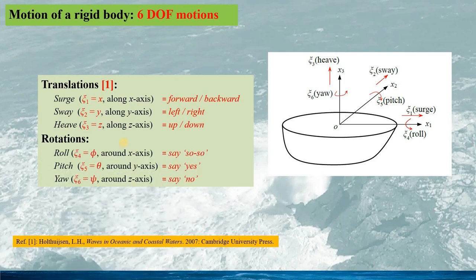There are also 3 rotational motions: roll motion around the x-axis, which can be understood as the gesture of saying so-so; pitch motion, the rotation around the y-axis, similar to the gesture of saying yes; and yaw motion, the rotation around the z-axis, equivalent to saying no.